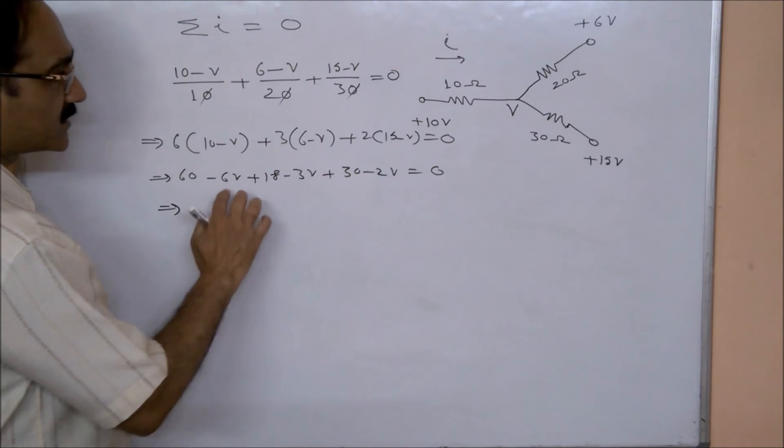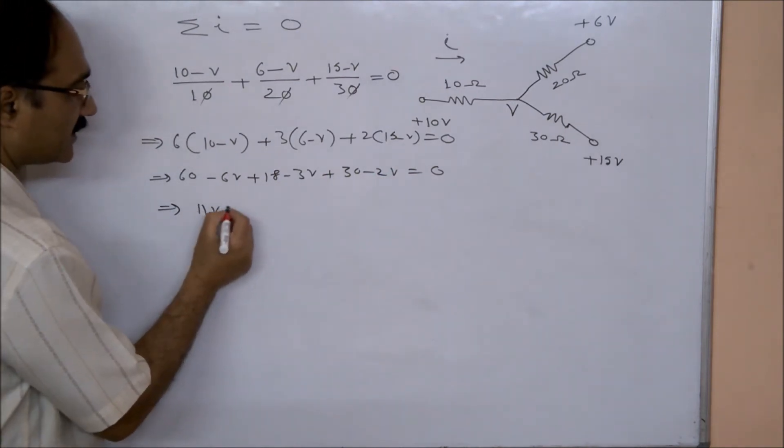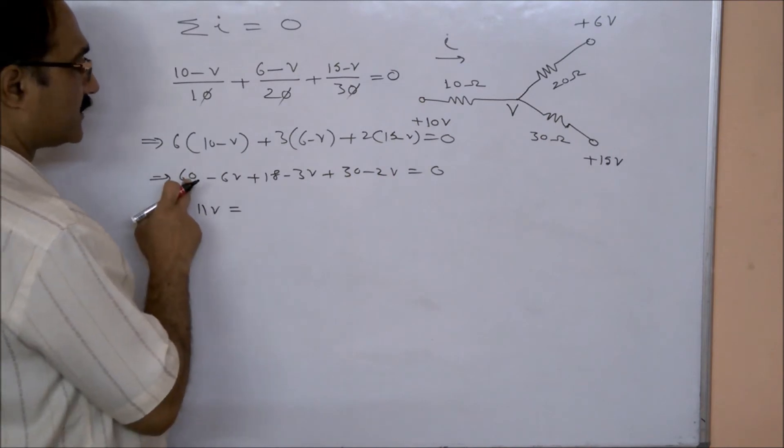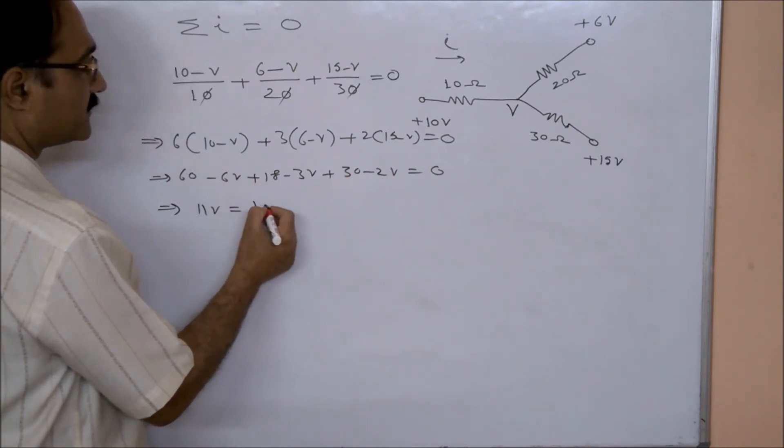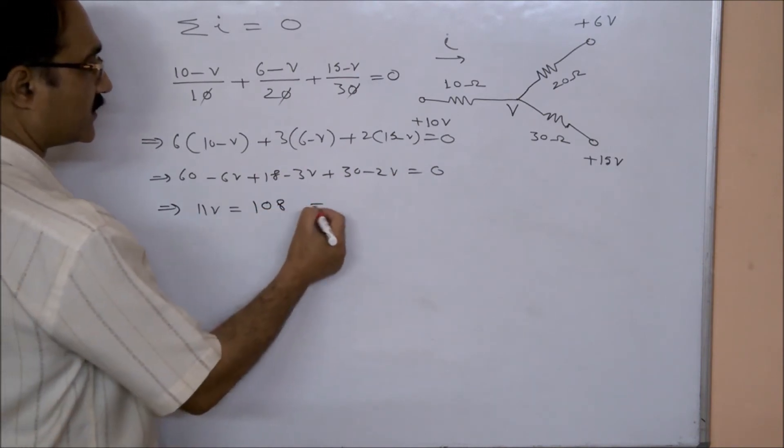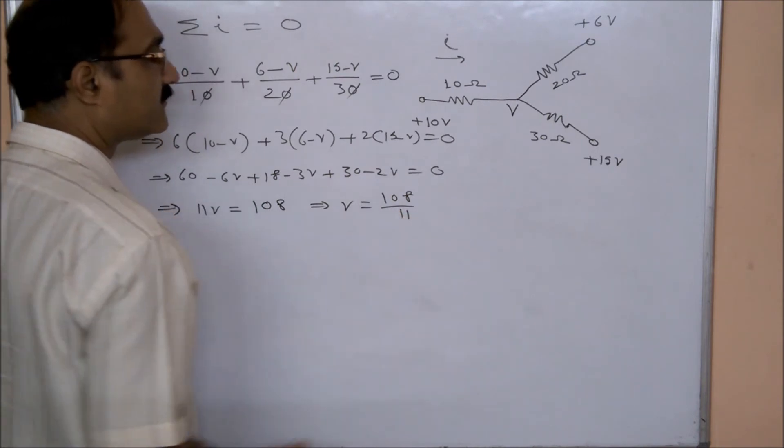So this will give us 6 + 3 is 9, plus 2 is 11. 11V equals 60 plus 30 plus 18, so that is 108. So that means V = 108/11 volts.